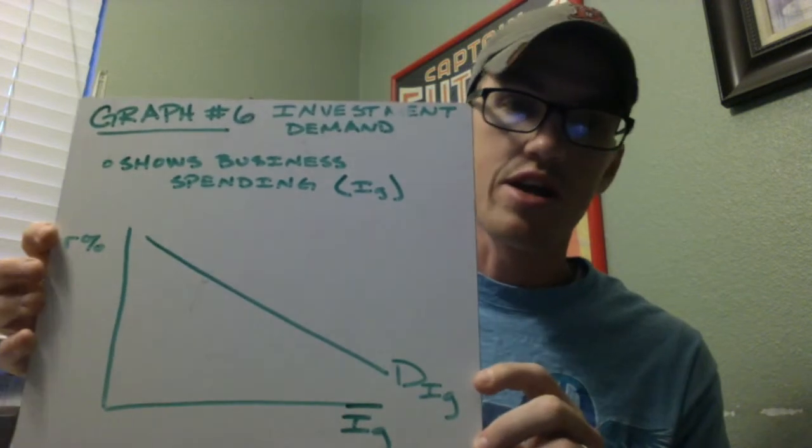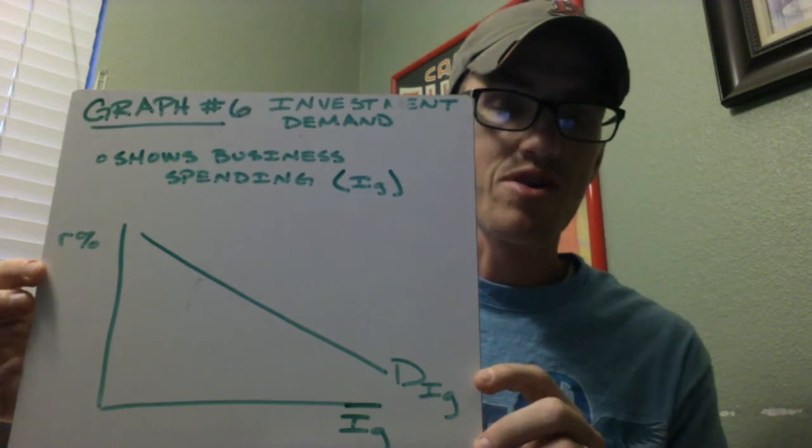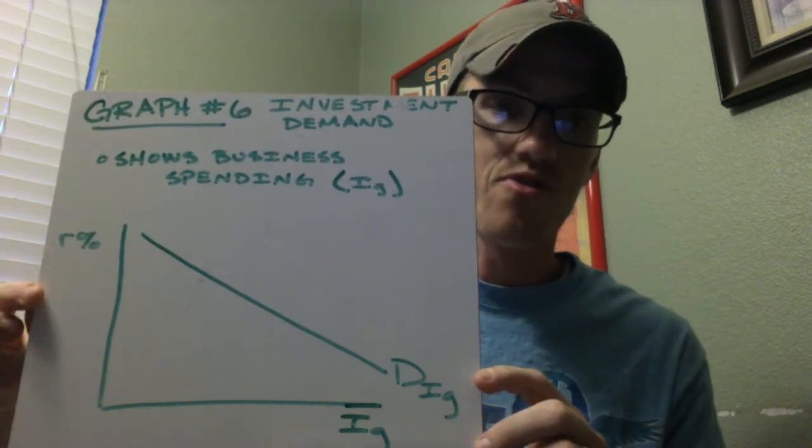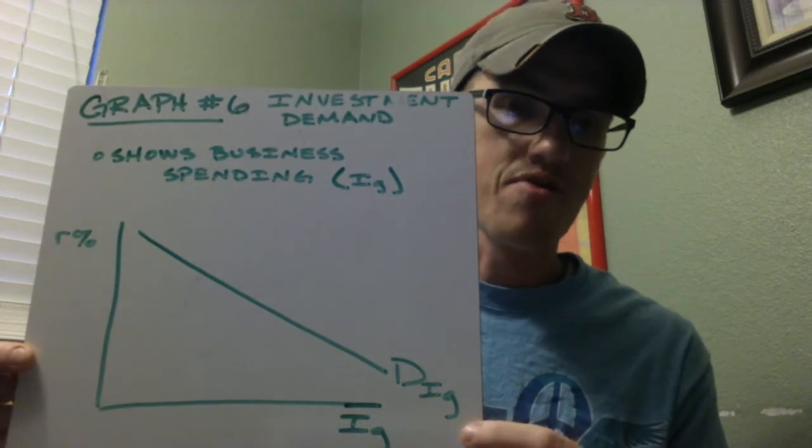And like any other demand at a high price, in this case interest rates, we don't demand as much because it's harder to pay back. And as interest rates or the price falls, quantity demanded goes up.